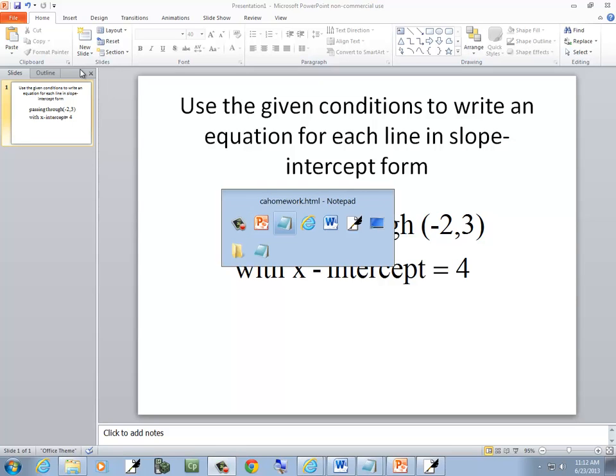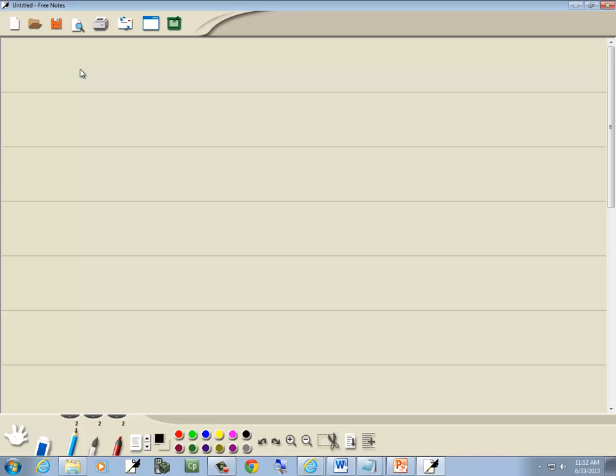Let's look at this problem. It's passing through negative 2, 3.